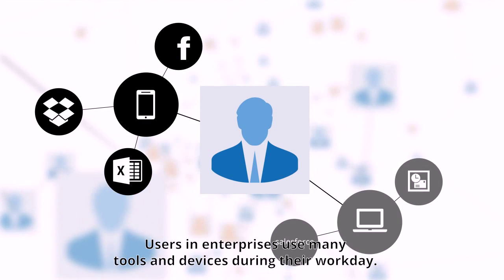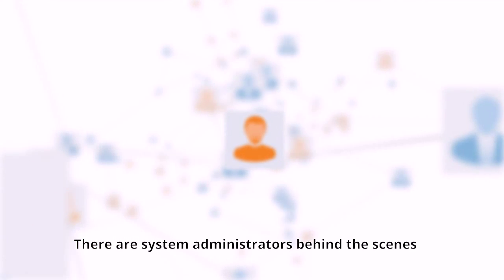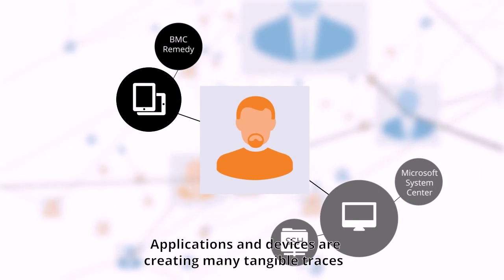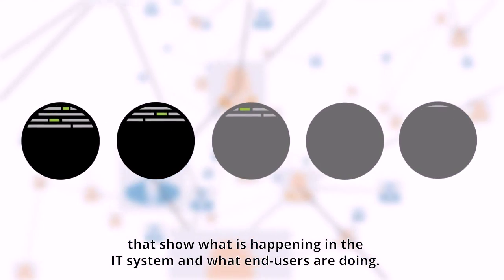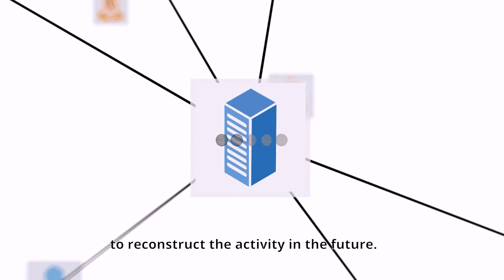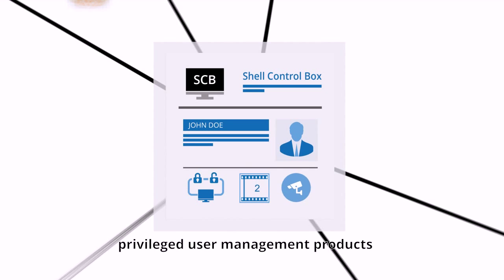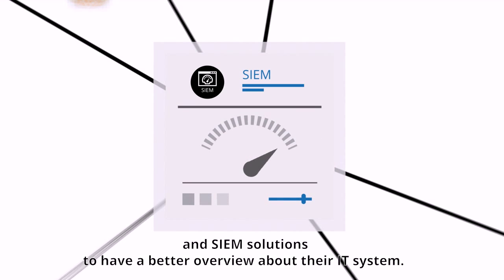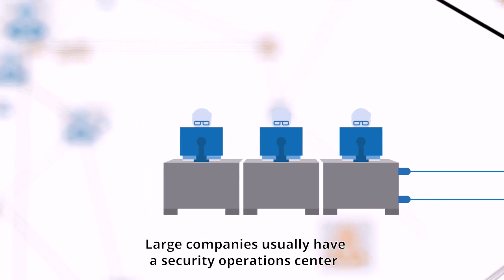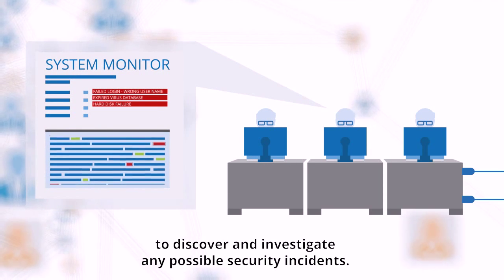Users and enterprises use many tools and devices during their workday. There are system administrators behind the scenes who keep the systems up and running. Applications and devices create many tangible traces that show what is happening in the IT system and what end users are doing. These records of activity are collected centrally to reconstruct the activity in the future. Enterprises can use various log collection tools, privileged user management products, and SIEM solutions to have a better overview of their IT system. Large companies usually have a security operations center where IT security experts monitor the whole IT system to discover and investigate any possible security incidents.